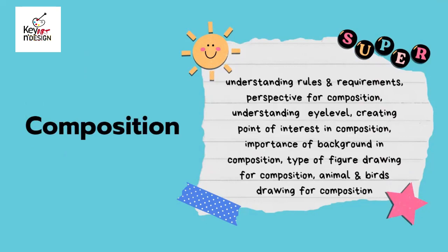Cartooning covers different expressions, caricature of humans, and caricature of non-living objects. Composition covers understanding rules and requirements, perspective for composition, understanding eye level, creating a point of interest in composition, the importance of background, types of drawing forms for composition, and animals and birds drawing for composition.